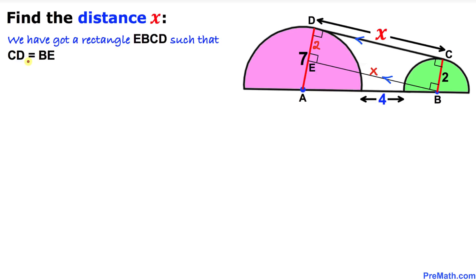So we can write CD equal to BE, and we know that our CD is x. So that means this BE is going to be x as well. And likewise BC is going to be ED, and we know that BC is 2, so that means our ED is going to be 2 as well.